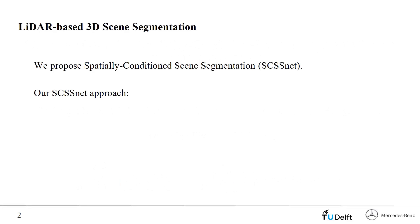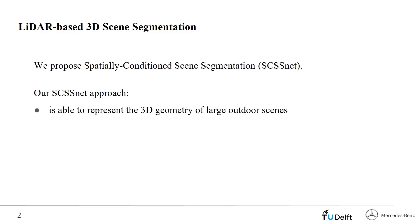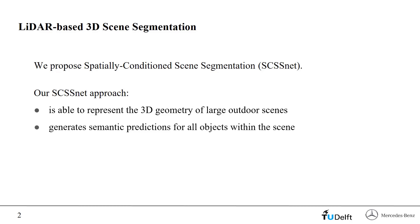The task of scene segmentation is challenging because it requires the description of complete 3D space, as opposed to being limited to the point of view of a sensor and the resulting sensor view image. Our approach specifically addresses the problem of representing the geometry of large outdoor scenes. We are able to avoid a trade-off between processable scene extent and resolution of geometry. Our approach generates semantic predictions from the full set of 19 classes of the Semantic KITTI dataset for all objects within the scene. SCSSnet takes only a single LiDAR point cloud as input to build up the scene representation.